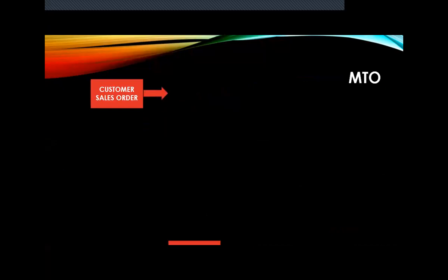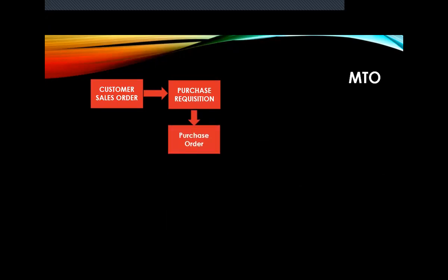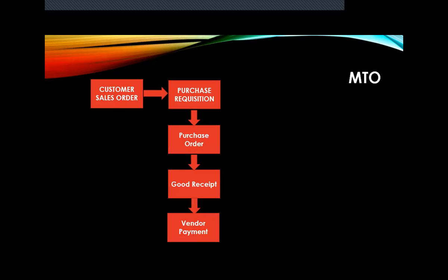A customer walks in and gives the order. Once the sales order is confirmed, the purchasing department creates a purchase requisition and then a purchase order. The purchase order is the order confirmation sent to the vendor. They do goods inward, reserve goods, buy the material from the vendor, do goods receipt, and pay the vendor.